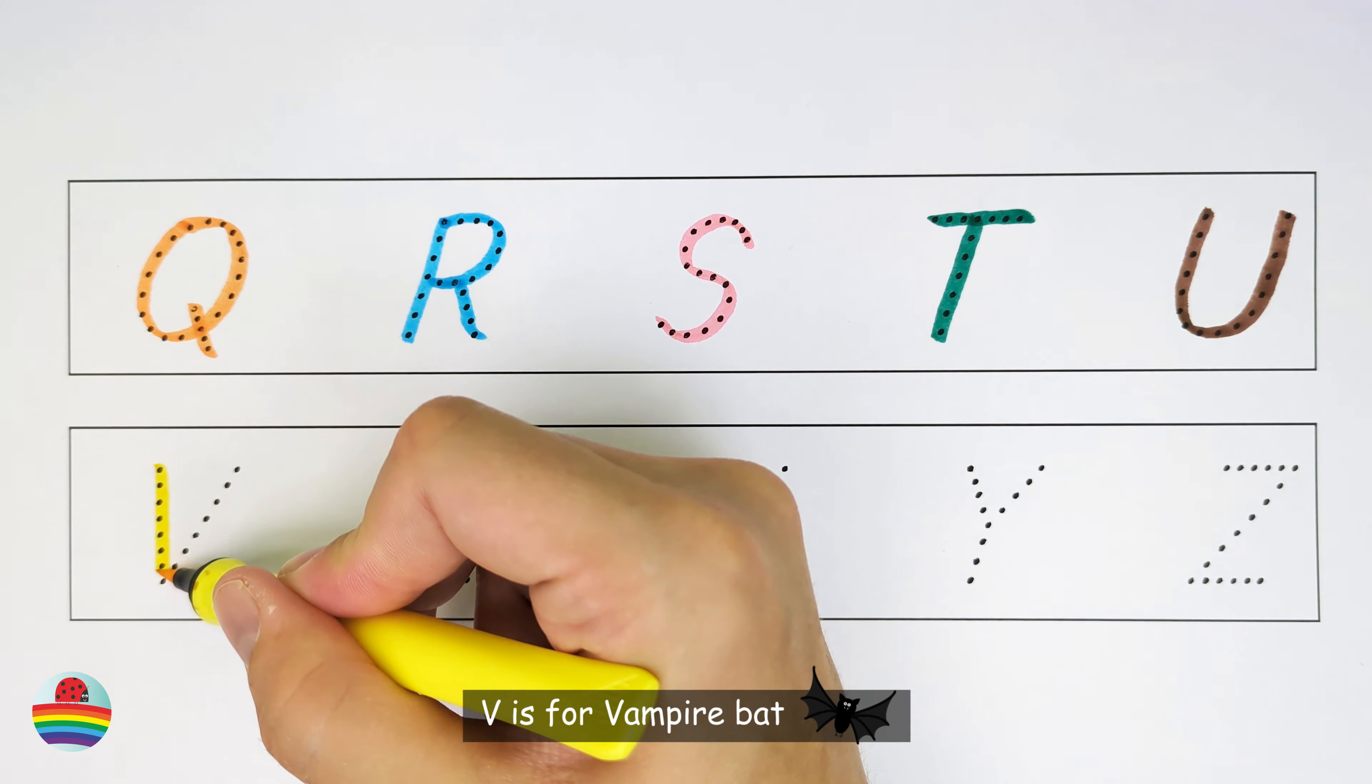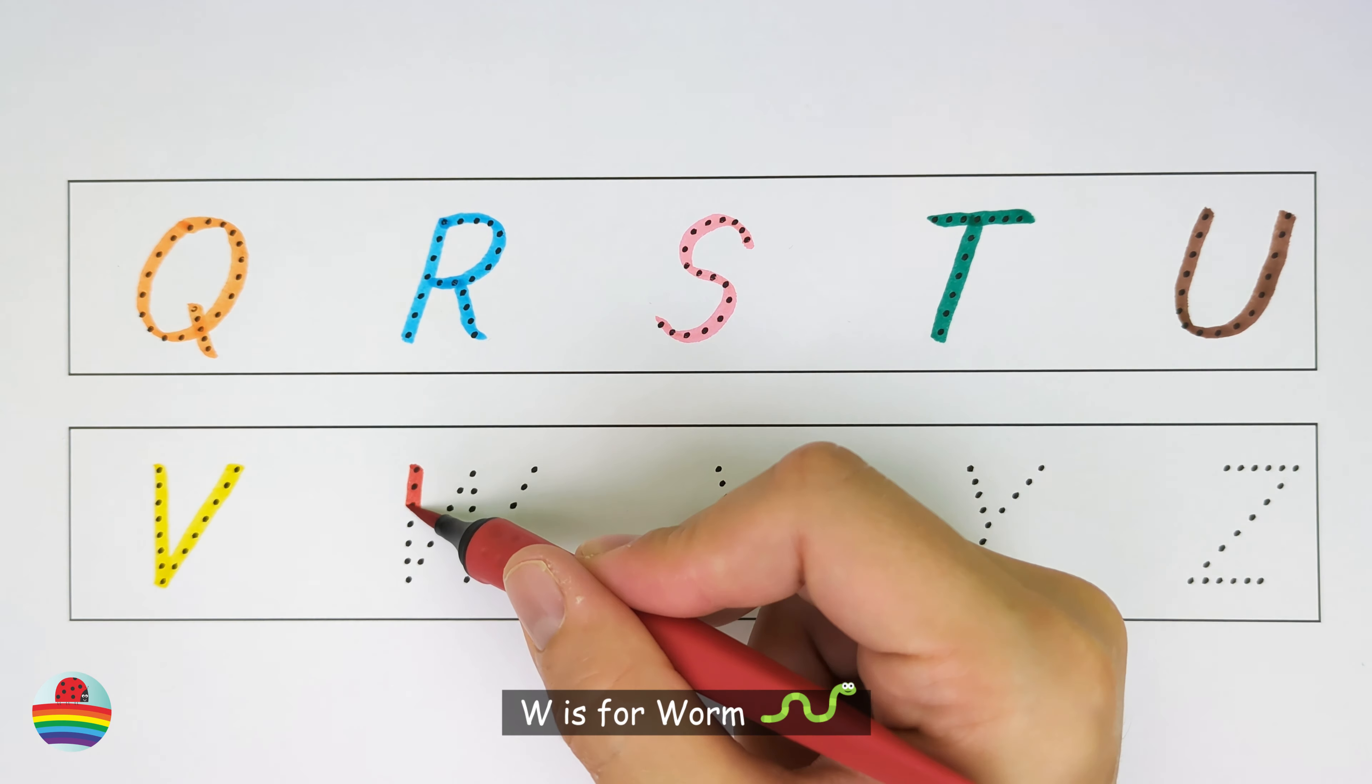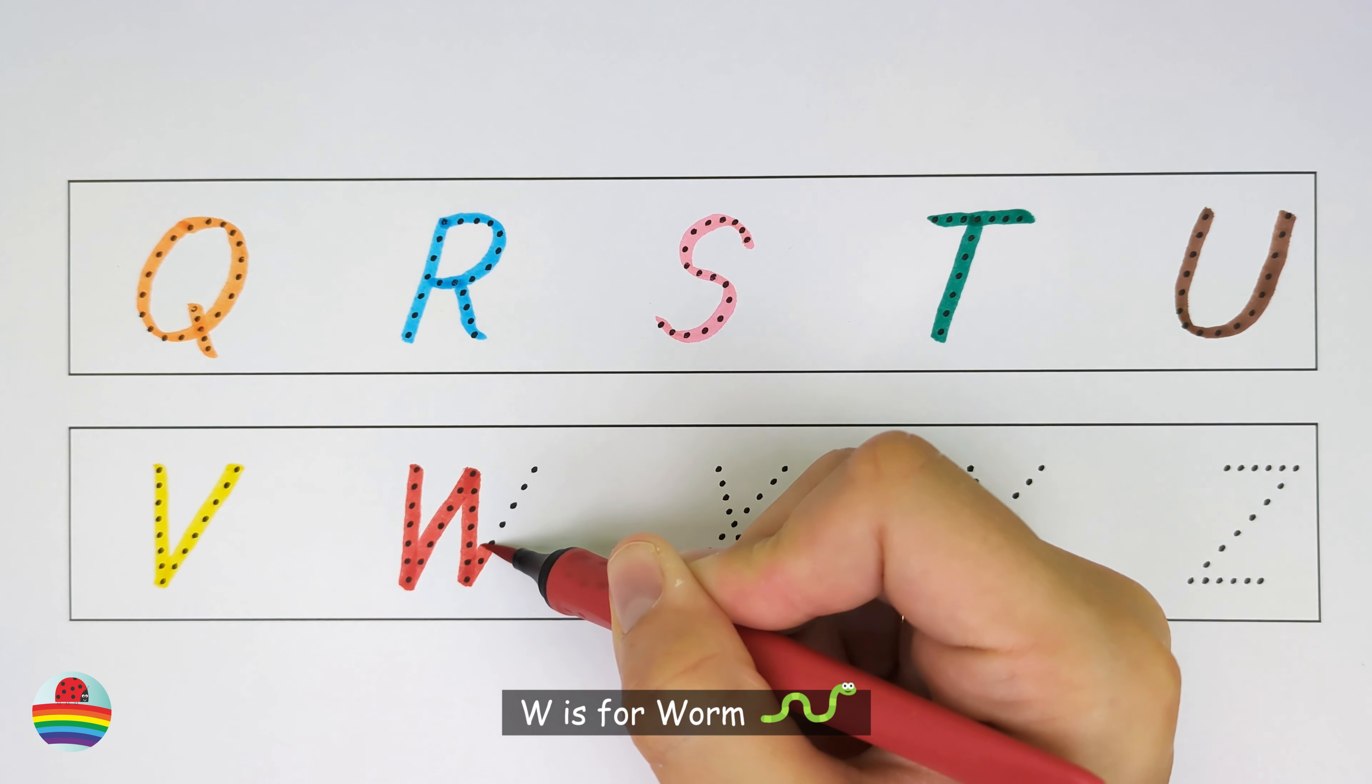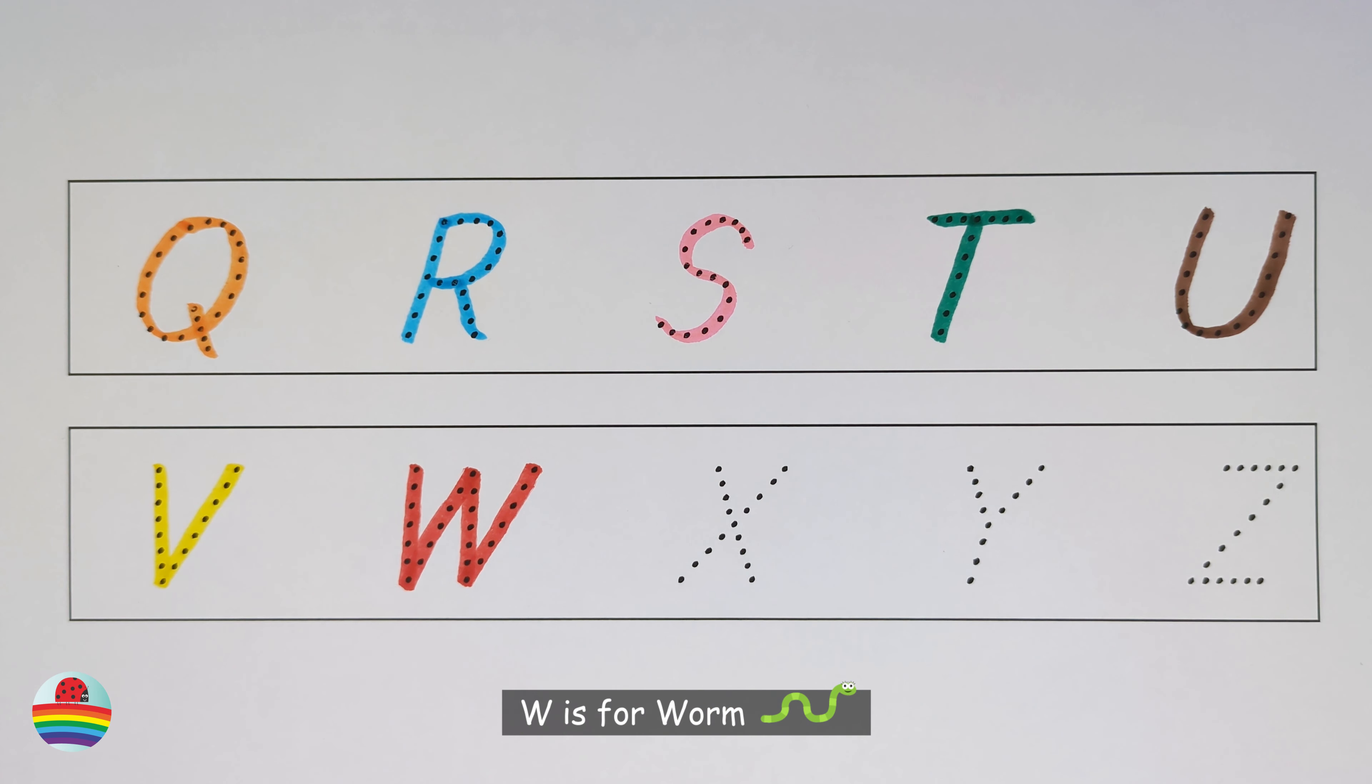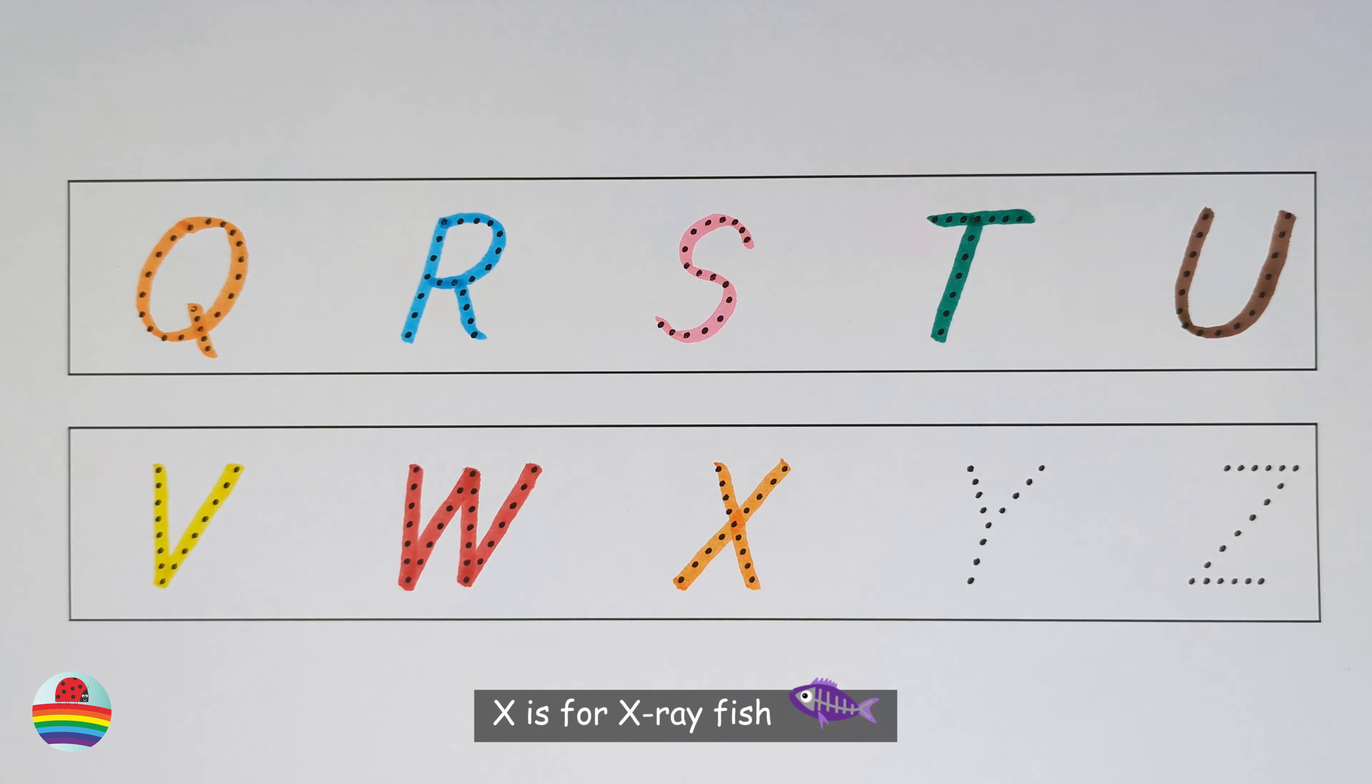V. V is for Vampire Bat. V. W. W is for Worm. W. X. X is for X-Ray Fish. X.